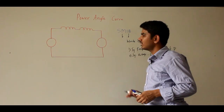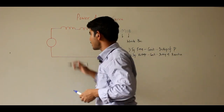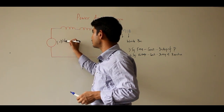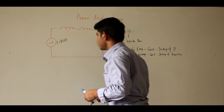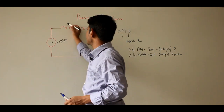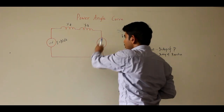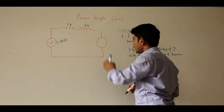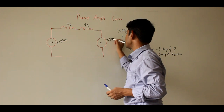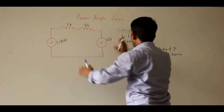The single machine is a synchronous machine having an internal EMF given by magnitude E at angle delta. This synchronous machine has a direct axis synchronous reactance X_D, and the transmission line reactance is X_L. At the other terminals of this synchronous generator we have the infinite bus, with voltage V at angle zero. This is the Single Machine Infinite Bus system.